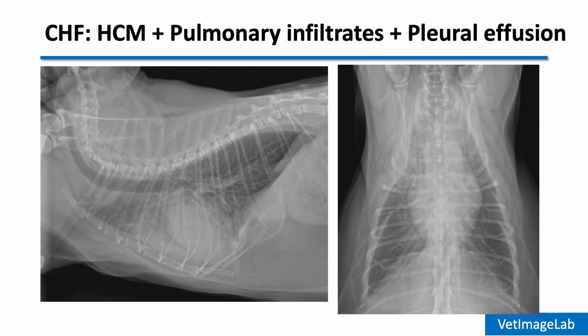In this case, pleural effusion is more prominent. You can see widened interlobar fissures and retraction of lung lobes, along with pulmonary infiltrates. This represents advanced congestive heart failure with significant pleural effusion.